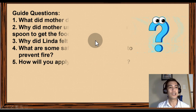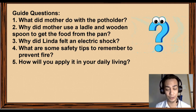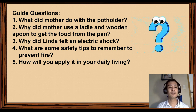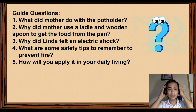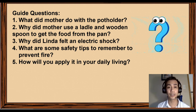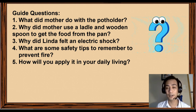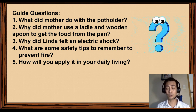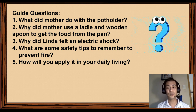Let's answer the guided questions. Number one: what did mother do with the pot holder? Mother used the pot holder so she would not get burned from the hot pan. Number two: why did mother use a ladle and wooden spoon? Because they are poor conductors of heat. Number three: why did Louisa feel an electric shock? Because she plugged in the electric kettle while her hands were wet. Do not do that!